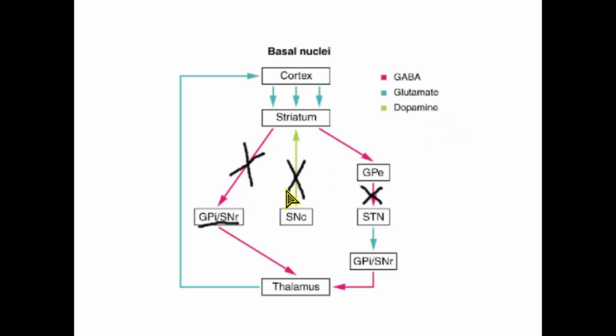And that's it. Those are the two possibilities: where the substantia nigra pars compacta is more active and its downstream effects, and where it is less active and the downstream effects of that. As always, if you have any questions, please feel free to leave them in the comments down below. I hope this helps you understand this graphic better, and thank you for watching.